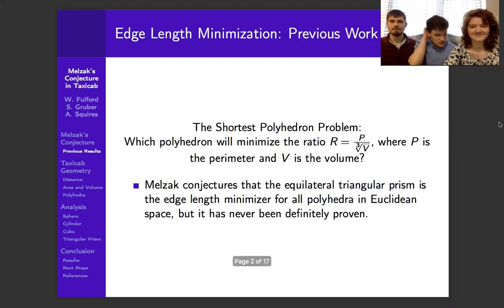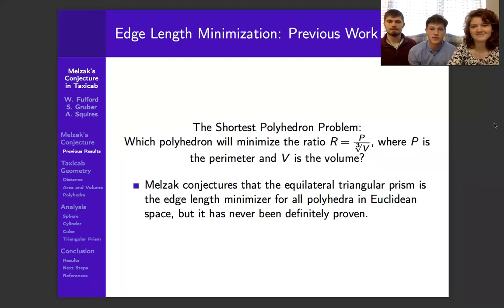Our research is in the shortest polyhedron problem, which aims to minimize the ratio between a polyhedron's edge length to its unit volume. Previously, Melzack conjectured that the equilateral triangular prism would be this edge length minimizer in Euclidean space, but that has never been proven.